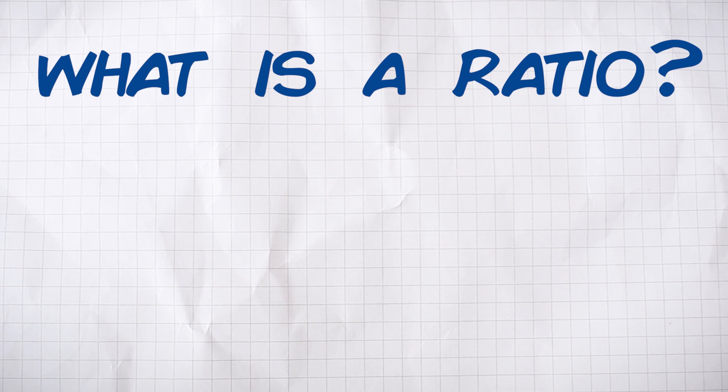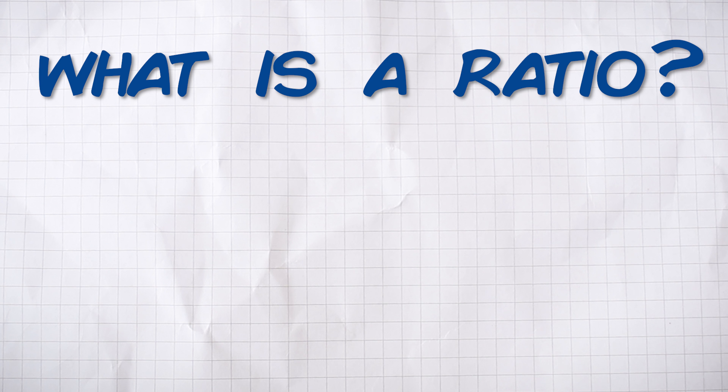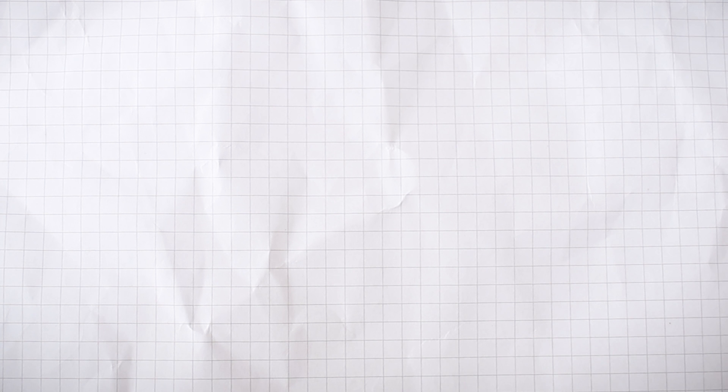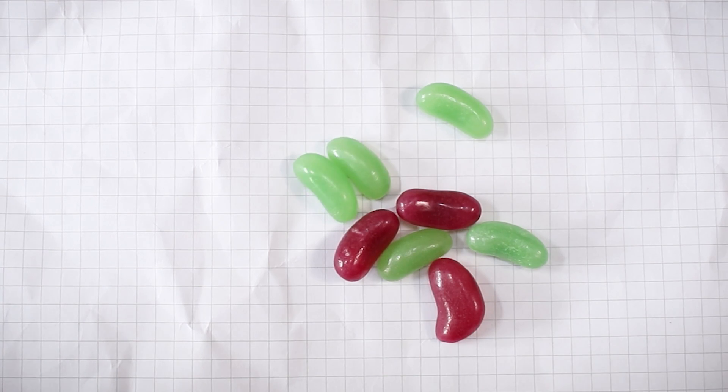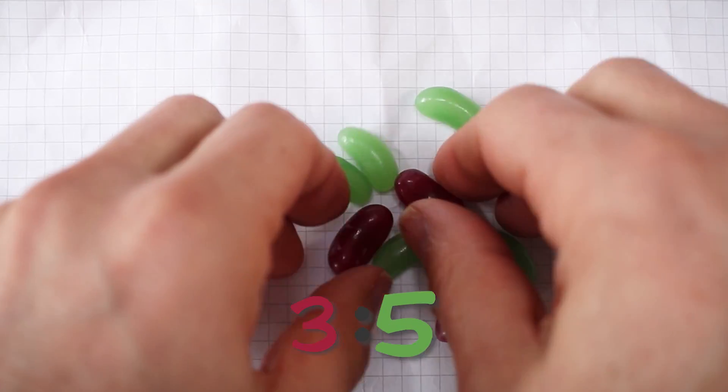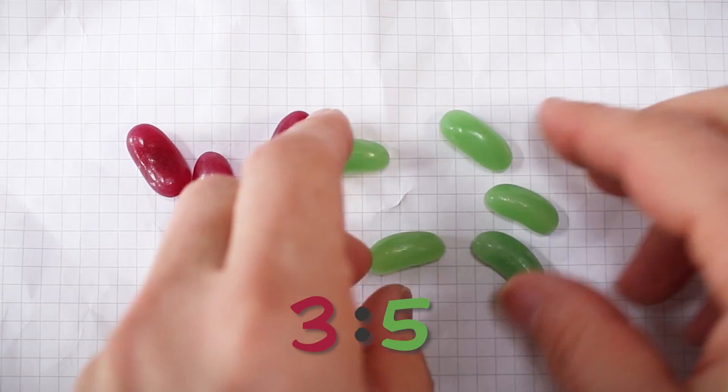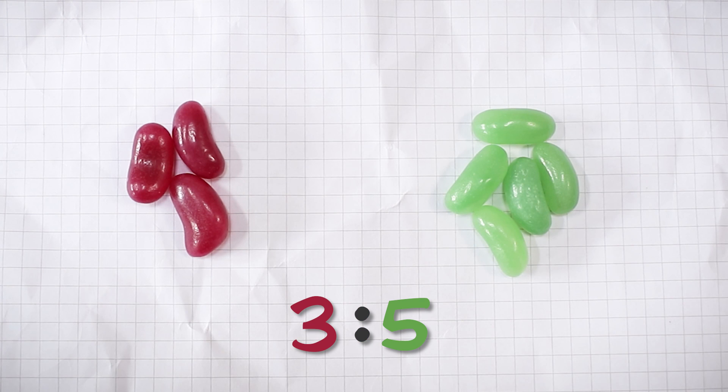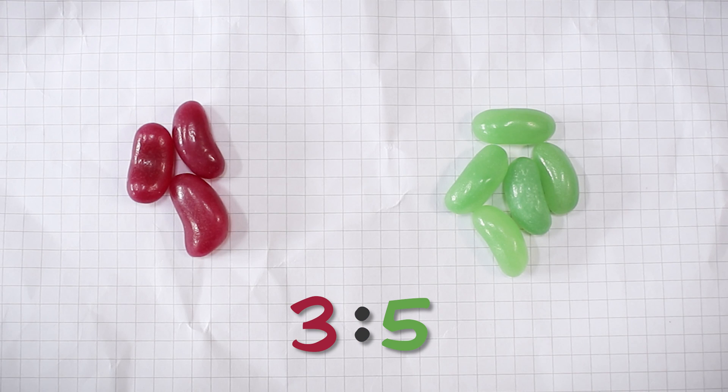First up, what is a ratio? A ratio is just a way of comparing two or more quantities. For example, the ratio of purple sweets to green sweets is 3 to 5 because there are three purple sweets and five green sweets, and you can see how we write it with the colon in between the numbers. Or the ratio of likes to dislikes on this YouTube video is 558 to 12. So that's what a ratio is.